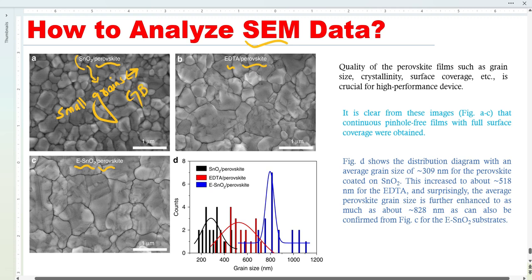There are a lot of grain boundaries which is detrimental for a device because there is mechanical instability, the fracture occurs, the moisture can enter through these grain boundaries, etc. But once we deposit this perovskite on EDTA, we can see that there is a significant change occurring to the grains.